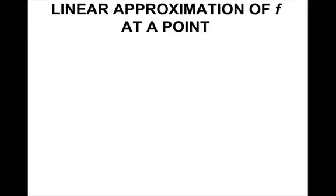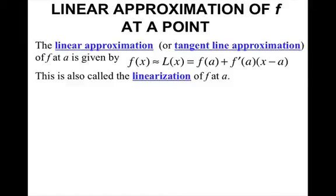So linear approximation of f at a point. The linear approximation, or tangent line approximation, of f at a is given by f(x) approximately equals L(x), which equals f(a) plus f prime of a times x minus a. This is also called the linearization of f at a.